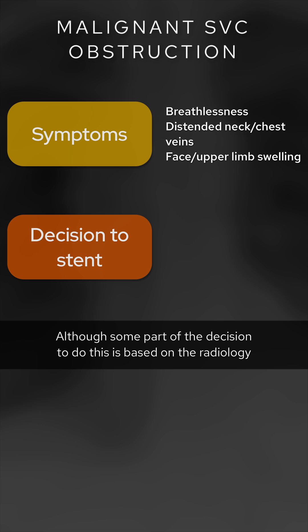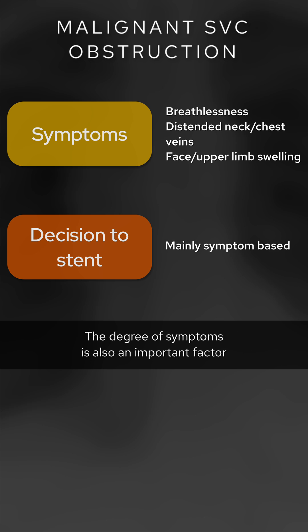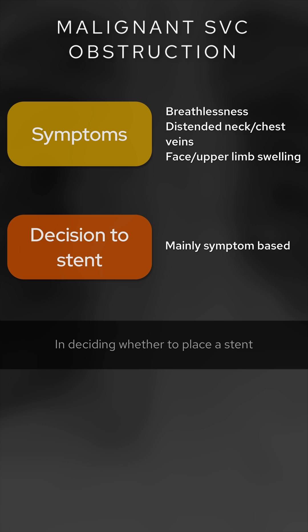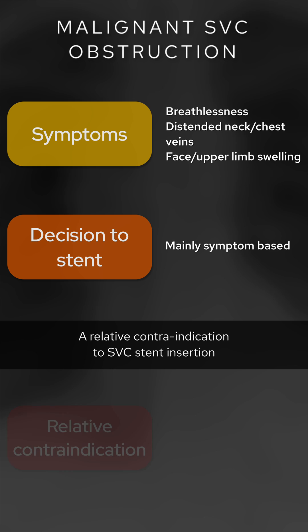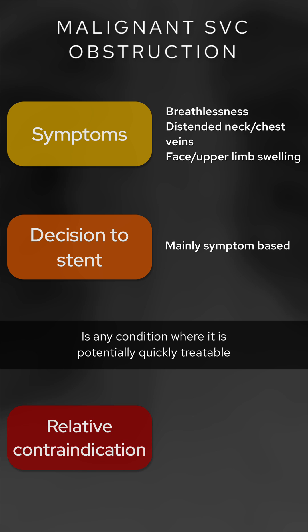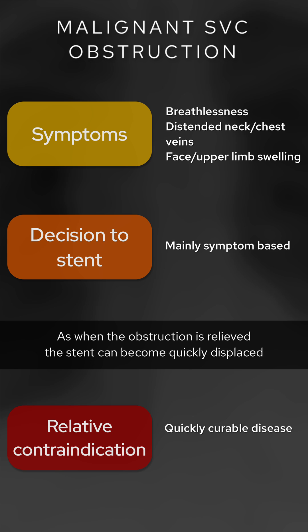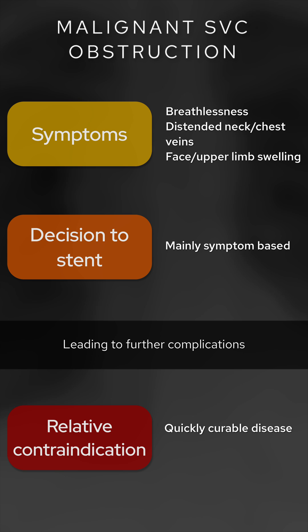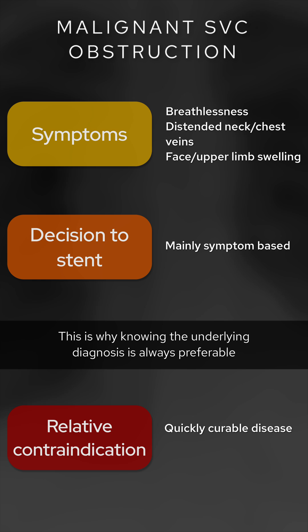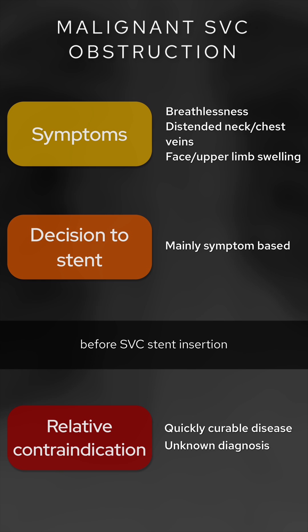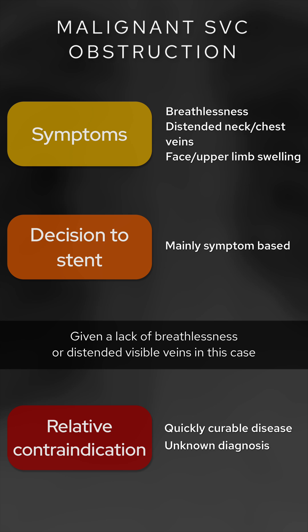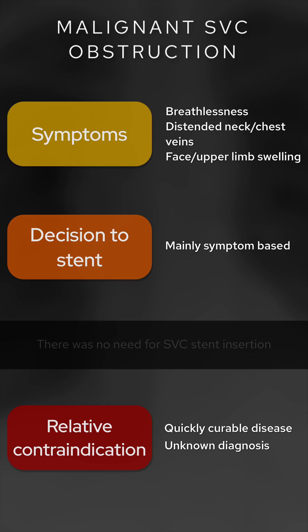Although some part of the decision to do this is based on the radiology, the degree of symptoms is also an important factor in deciding whether to place a stent. A relative contraindication to SVC stent insertion is any condition where it is potentially quickly treatable, as when the obstruction is relieved, the stent can become quickly displaced, leading to further complications. This is why knowing the underlying diagnosis is always preferable before SVC stent insertion. Given a lack of breathlessness or distended visible veins in this case, there was no need for SVC stent insertion.